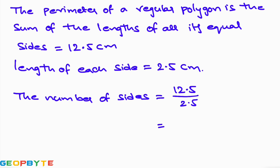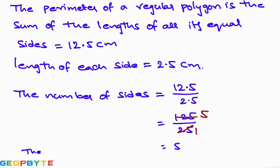Both numbers have only one digit after the decimal point, so we divide both by 10. The 10s cancel, leaving 125 by 25. Since 25 fives are 125, the result is 5. So the polygon has five sides. If the perimeter is 12.5 cm and each side is 2.5 cm, then the polygon has 5 sides.